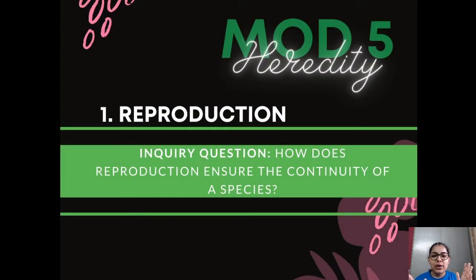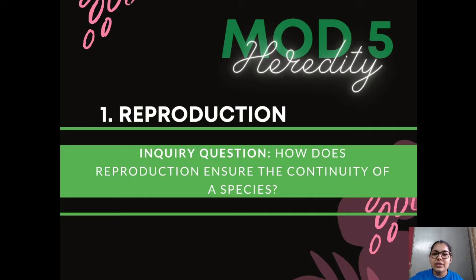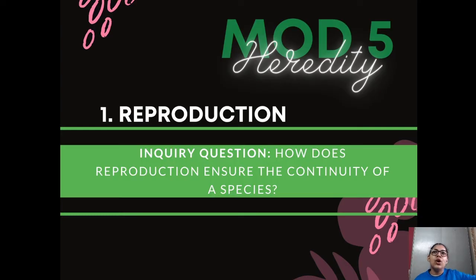Let's start off with that very first question: how does reproduction ensure the continuity of the species? How is reproduction happening, how is it passing through living organisms and generations in order to achieve the continuity of a species? That's what we are looking at.